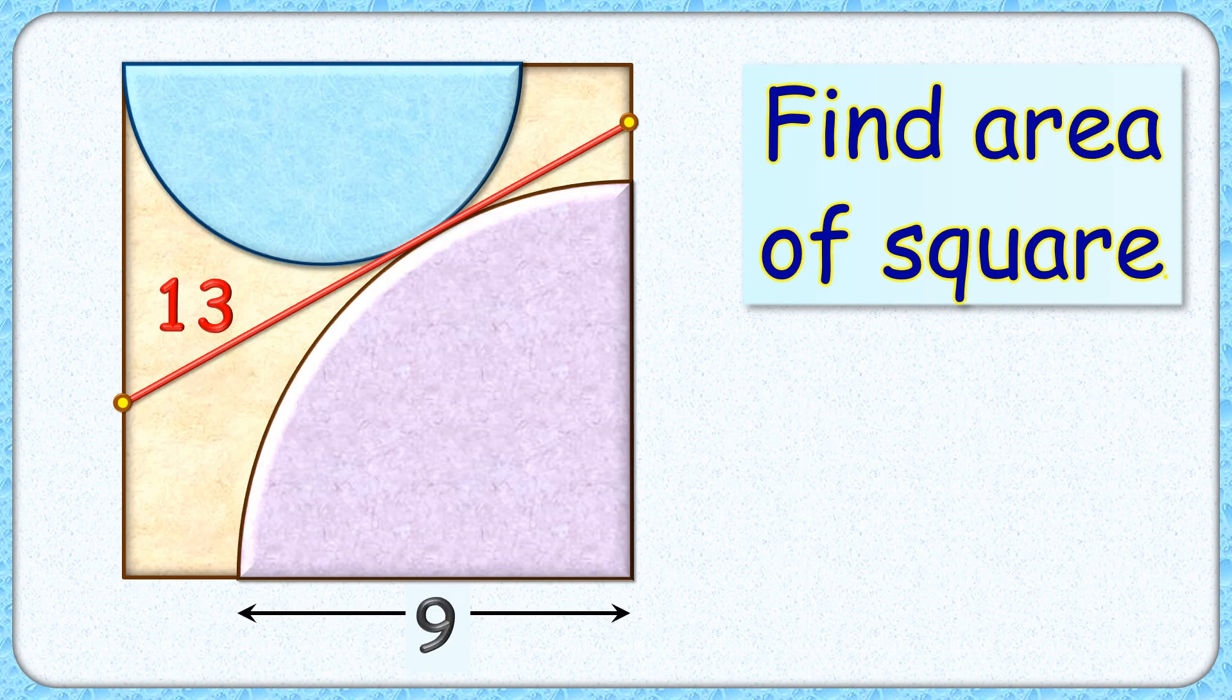In this interesting question, given is a square with a quadrant and a semicircle inside it touching each other. From this common point, a tangent is drawn. If the length of the tangent is 13 cm and the radius of the quadrant is 9 cm, with this limited information we have to find the area of the square.